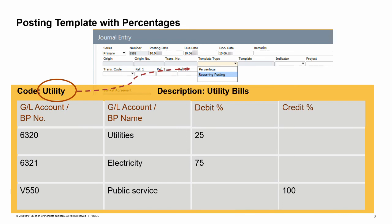The posting template is stored under a code and with a description. Then, when you enter a journal entry manually, you can choose the percentage template type and the relevant template, enter an amount in one of the line items, and the template will allocate the amounts to the other lines based on the percentage rate you have defined. Use the cancel template option to enter amounts without the auto calculation.